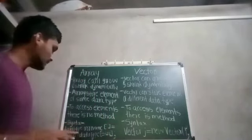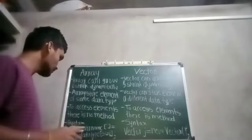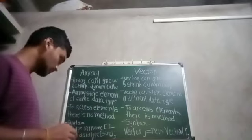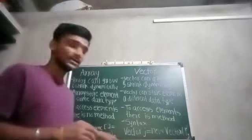The syntax of an array is: data type, array name, new keyword is used, data type and size is given in square brackets.